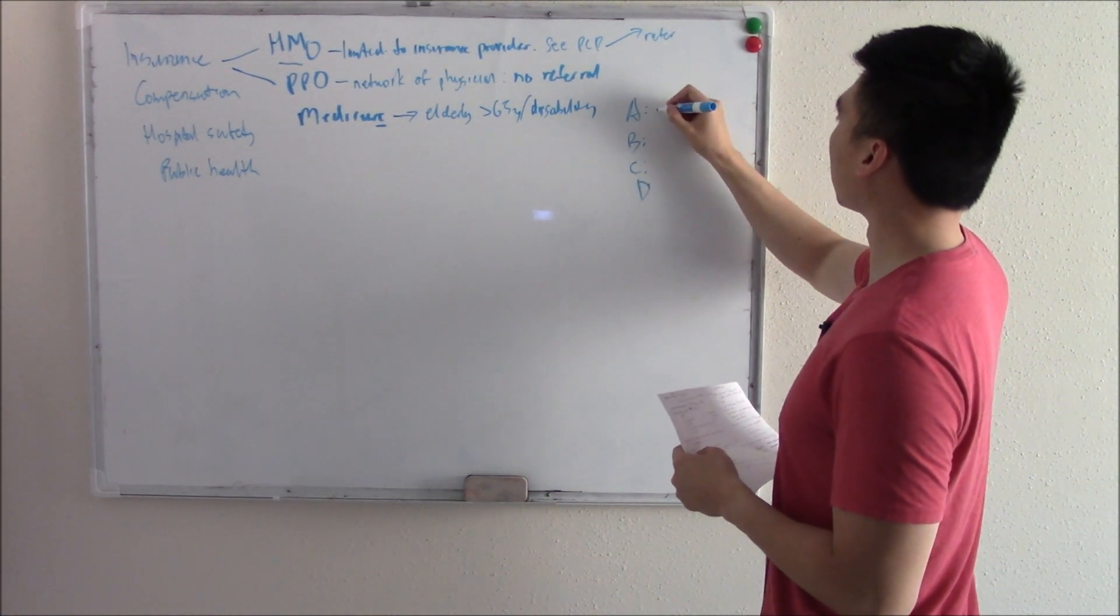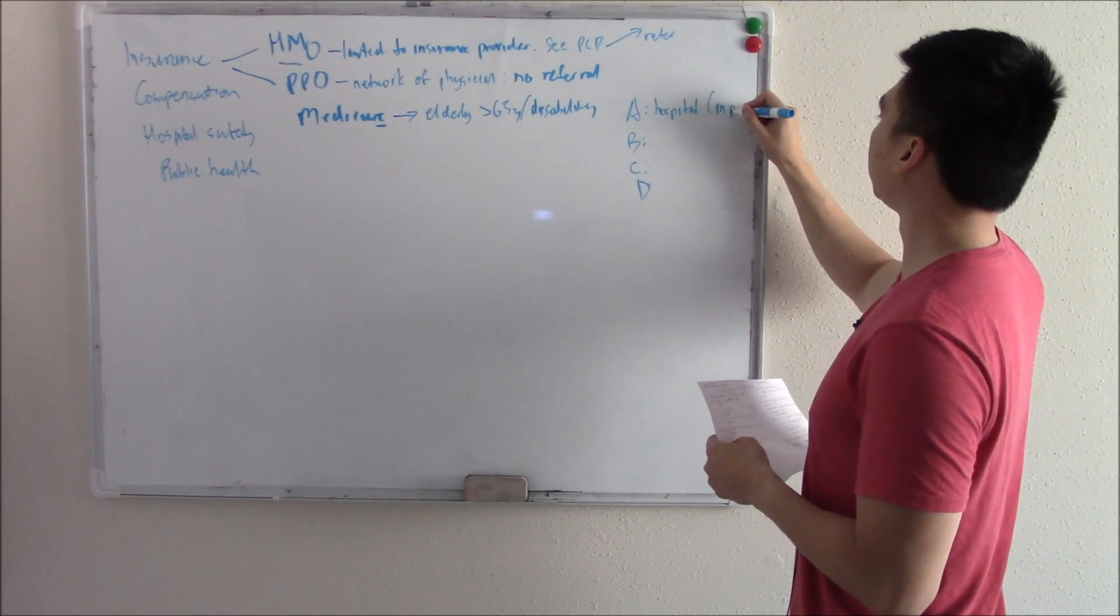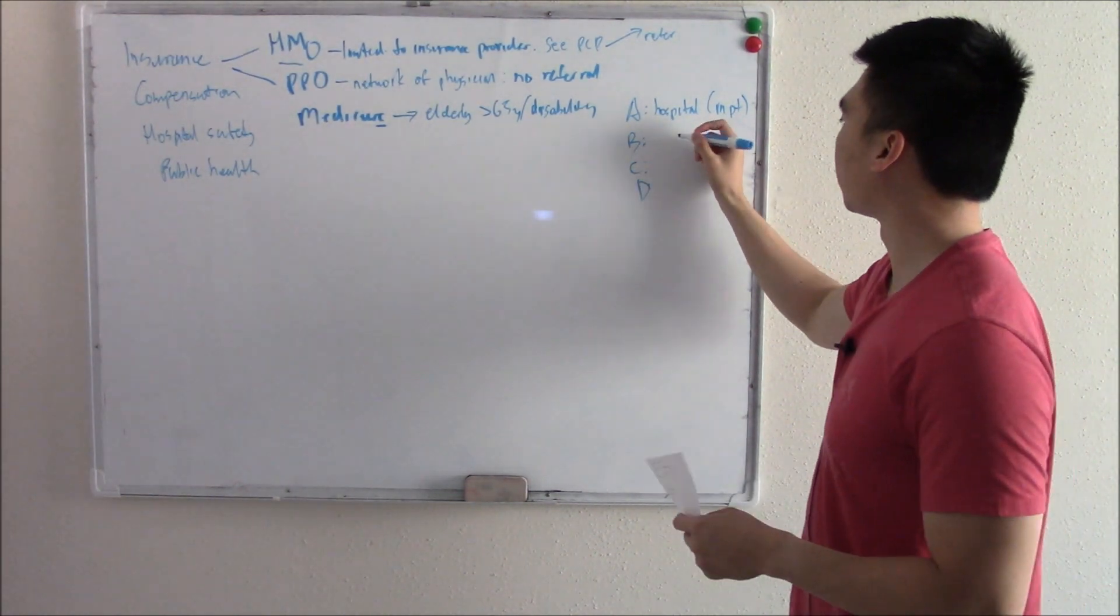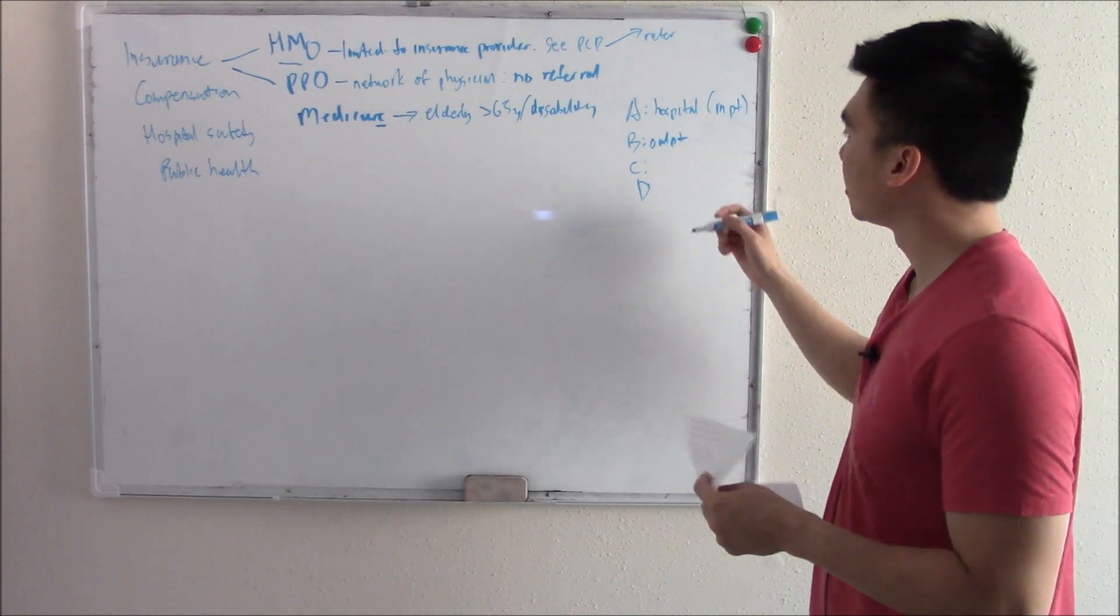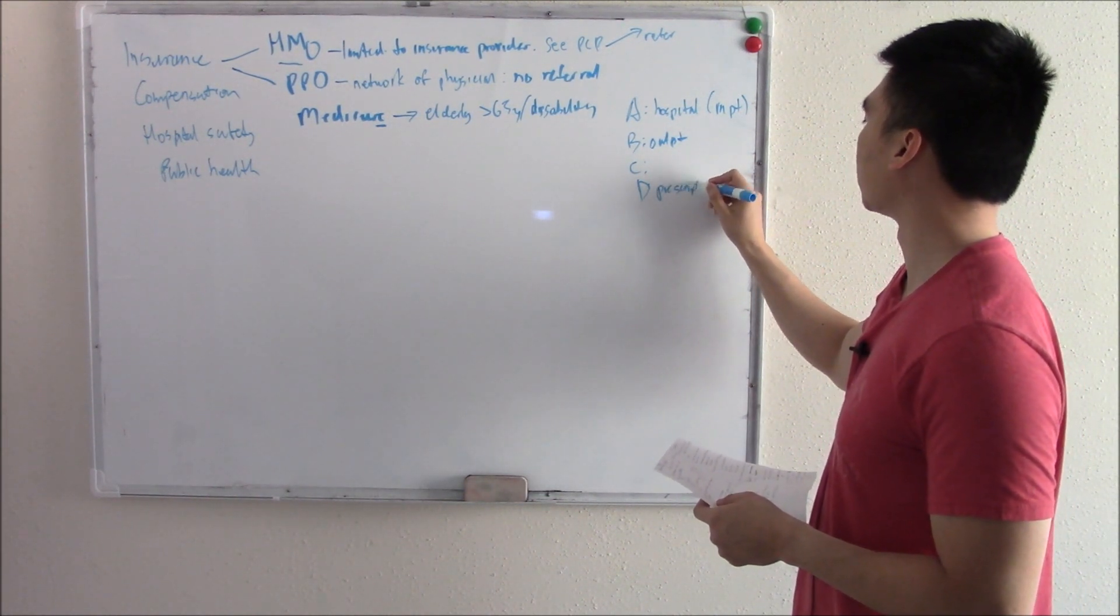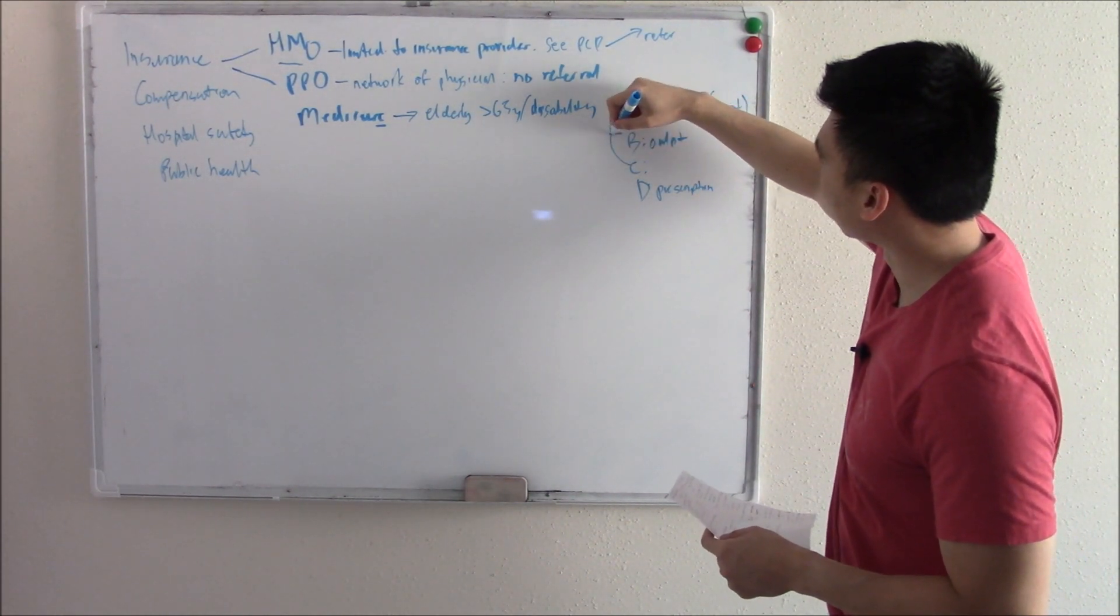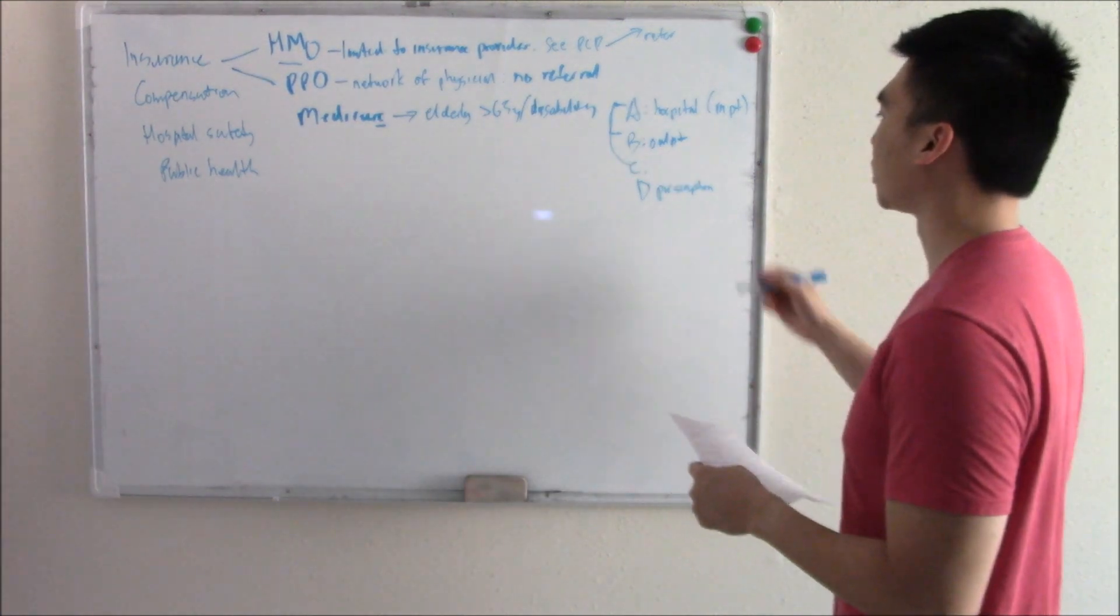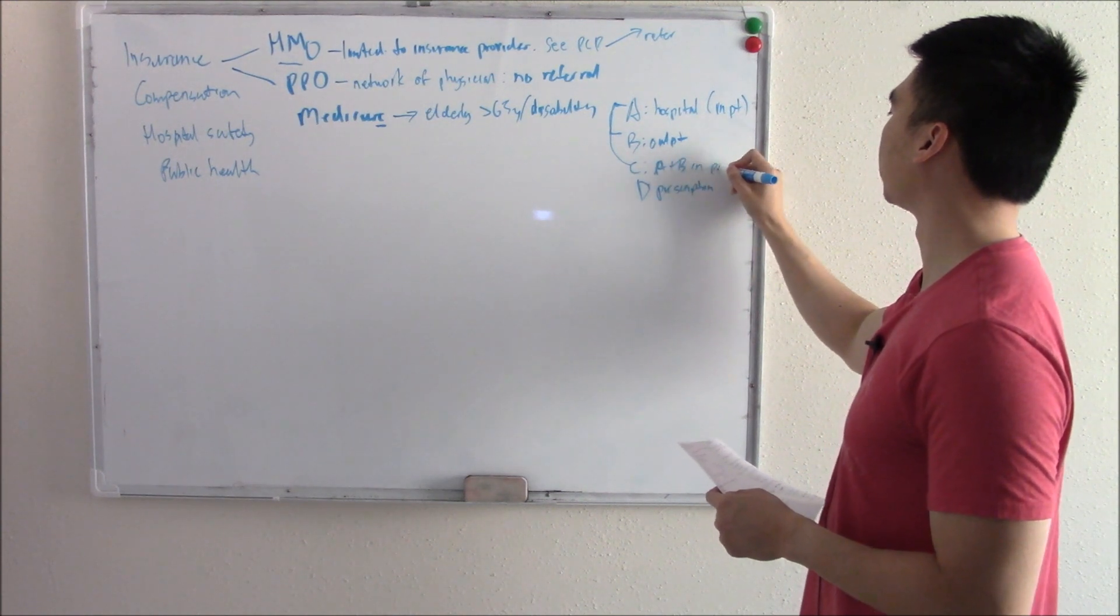A is for hospital insurance aka inpatient. So if something happens and they need to go to the hospital, they're covered. B is for outpatient. Basically like clinic and stuff like that. D is for prescription medication. You might be saying, what the heck is C? C is basically A and B, but for a private group that's been approved by Medicare. So C is A plus B in a private setting.